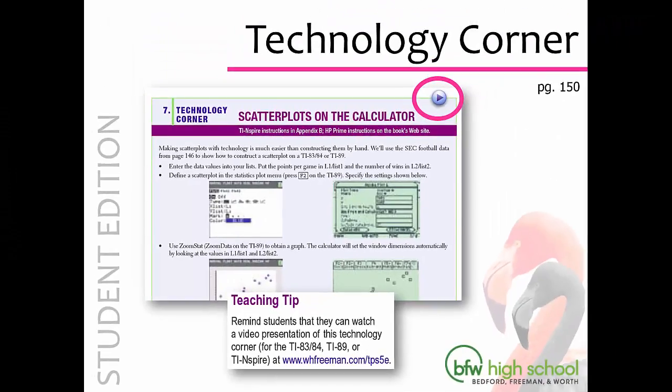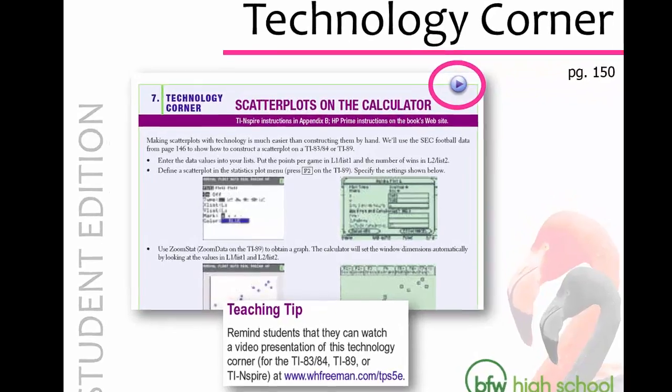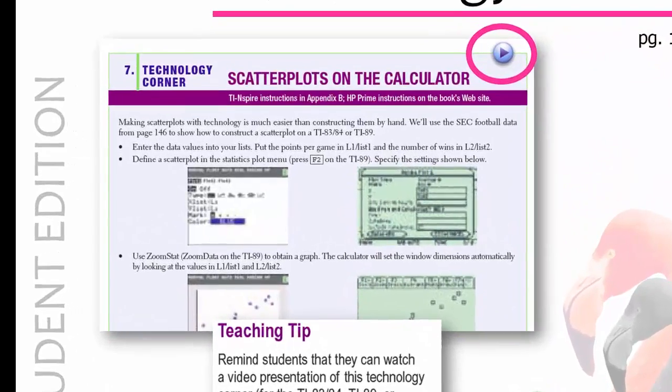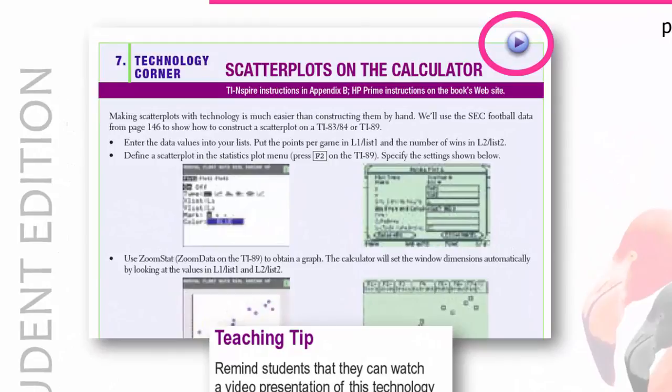The Technology Corner is designed to help your students understand the different types of technology that they will be using on the AP exam. You will again see the play button next to the Technology Corner. Your students will be able to log on to the Book Companion site and watch the Technology Corner videos that will walk them through how to use their calculators.